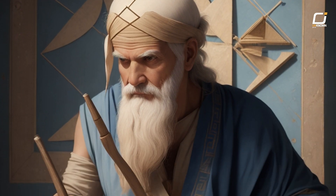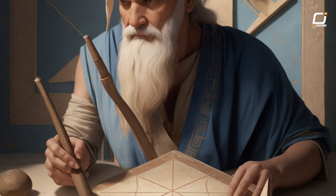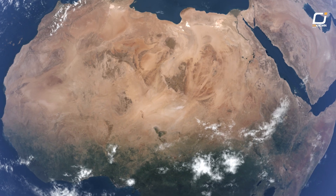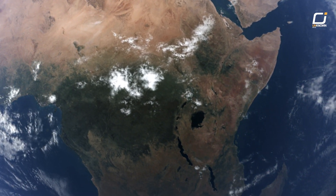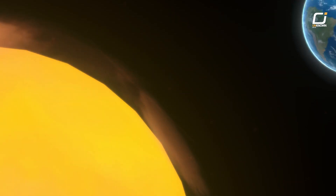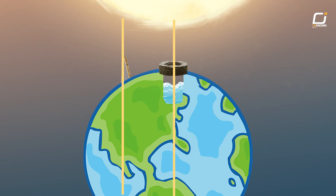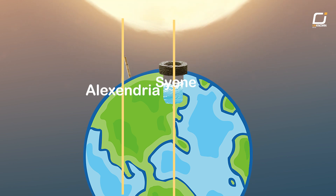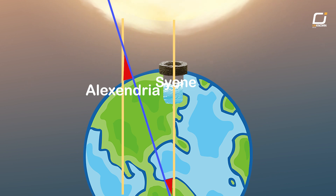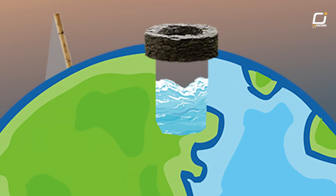Being a scholar of geometry, Eratosthenes realized this observation could allow him to calculate the circumference of the earth. He knew that the sun's rays shine parallel to each other, so the angle of the sun's rays relative to the vertical rod would be the same as the angle between Alexandria and Syene formed at the center of the spherical earth. To determine this angle, Eratosthenes simply measured the rod's shadow and its height.